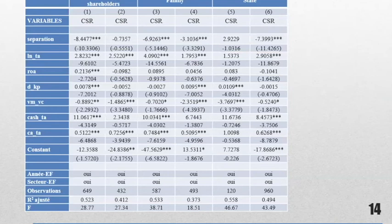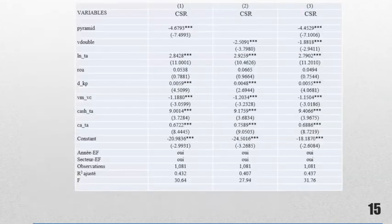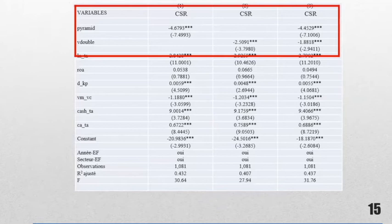Let's move to table eight. In this table, we distinguish between the mechanisms of separation, pyramidal structure and double voting rights. These results show that there is a negative and significant effect on CSR from both pyramidal structure and double voting rights.